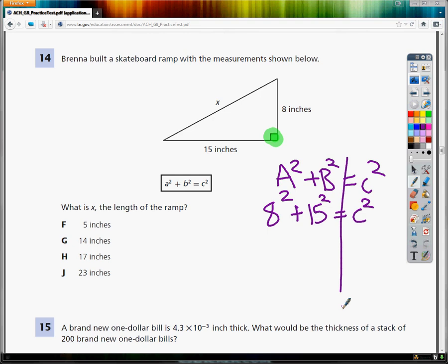8 squared is 64. 15 squared, unless I've lost my mind, is 225. Combine like terms on the same side, so 225 plus 64 is 289.